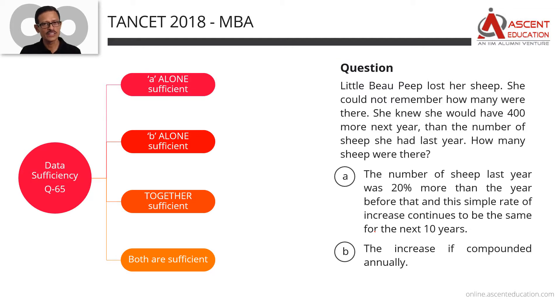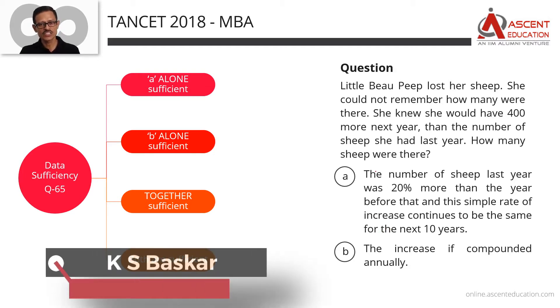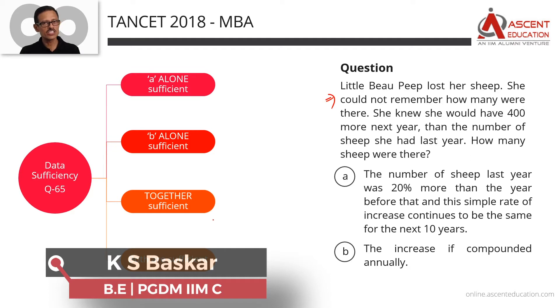Welcome to the TANCET Past Paper Solution — TANCET 2018 MBA Paper, Data Sufficiency. We're looking at Question Number 65. In all data sufficiency questions, there is a question followed by two statements.